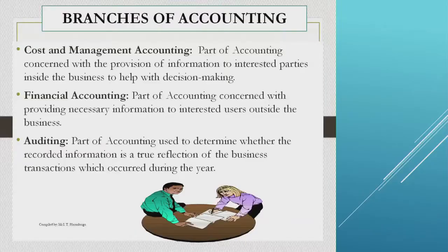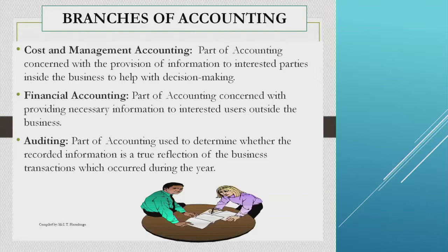There are three branches of accounting. First, cost and management accounting — the part of accounting concerned with providing information to interested parties inside the business to help with decision making. Managers want to make decisions based on the results obtained from the accounting information.